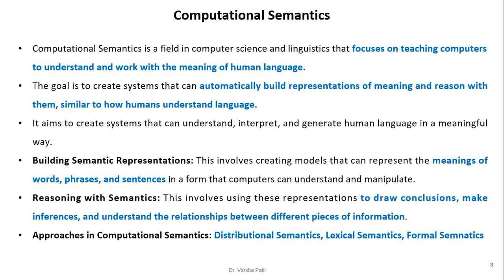Computational semantics is a field in computer science and linguistics that focuses on teaching computers to understand and work with the meanings of human language. The goal is to create systems that can automatically build representations of meaning, reason with them, and understand language similarly to how humans do.